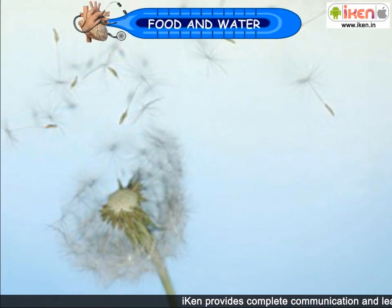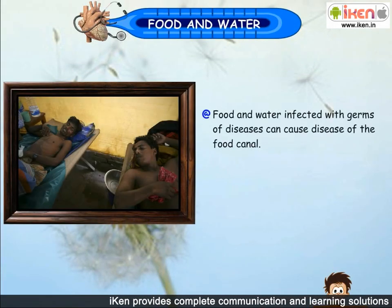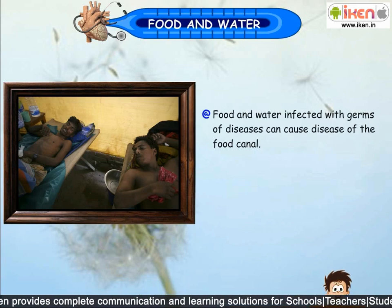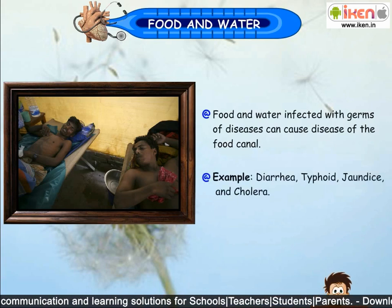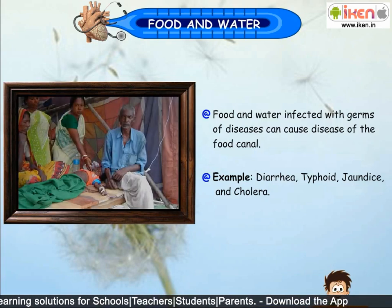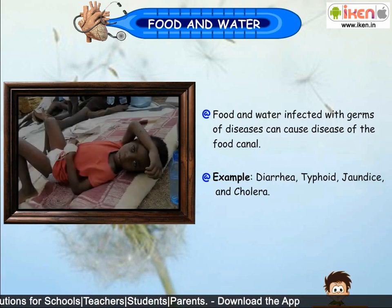Food and Water: Food and water infected with germs of diseases can cause diseases of the food canal. For example, diarrhea, typhoid, jaundice and cholera.